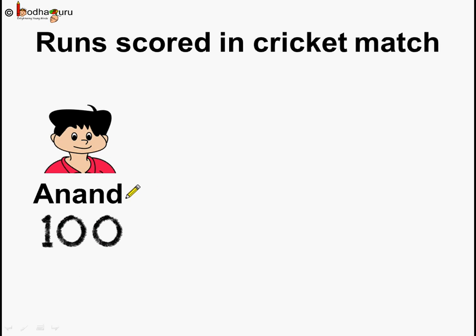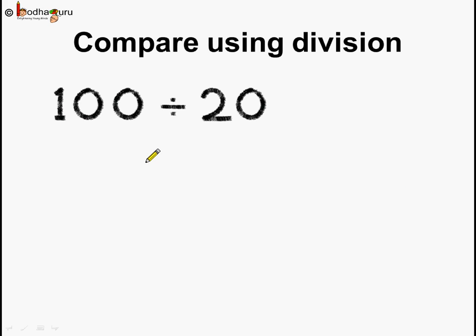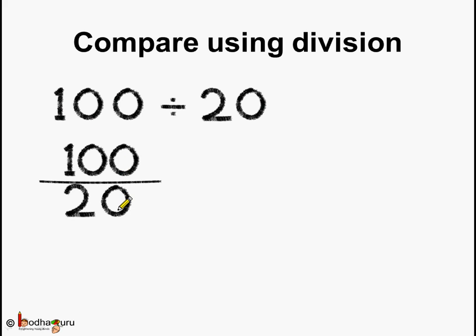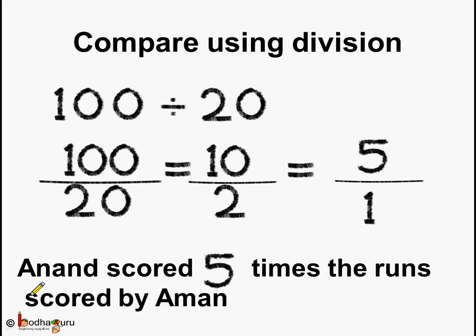Now coming to cricket — Anand is a better performer and he scored 100 runs in the cricket match, while Aman scored just 20 runs. Can we compare their performance? Using the division method we get 100 divided by 20. Dividing both the numerator and the denominator by 10 gives 10 by 2, which can be further reduced by dividing by 2: 2 fives are 10 and 2 ones are 2, so it reduces to 5 by 1. We can say Anand scored 5 times the runs scored by Aman.